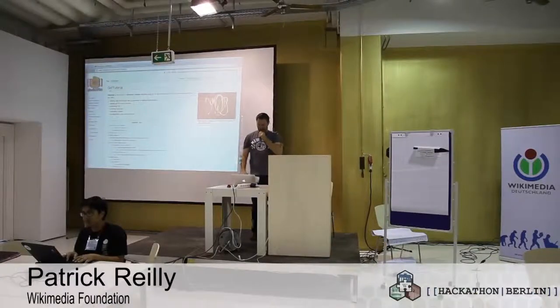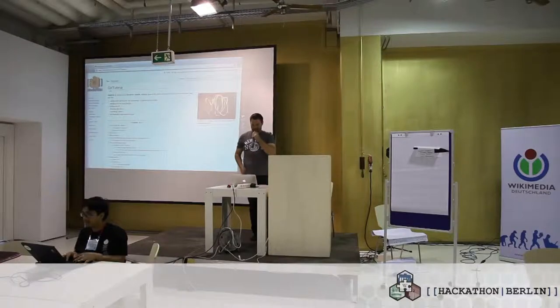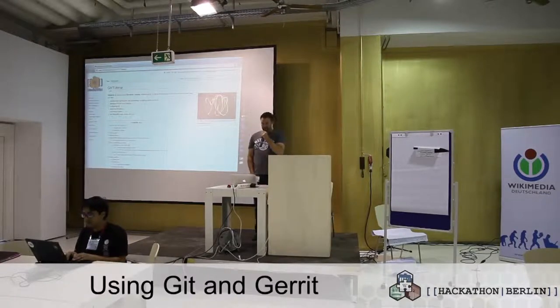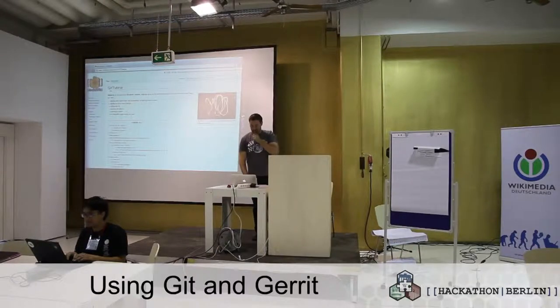Welcome to the Git and Gerrit tutorial. We're going to do basically step-by-step instructions of how to get started using Git and how to use Gerrit. First thing we're going to do is set up Git on the machine, configure Git to work with our Gerrit repo, and then install the Git review tool that we use to push our patch sets into Gerrit. Then we'll walk through changing some code, submitting a patch, and what the basic MediaWiki code review process is.